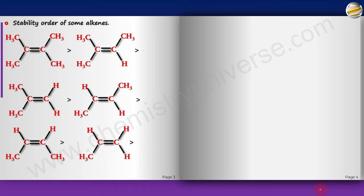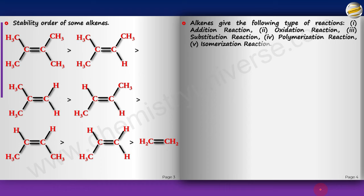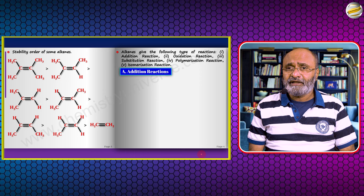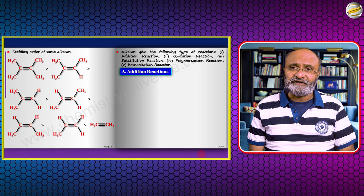Alkenes give the following types of reactions: addition, oxidation, substitution, polymerization, and isomerization. First let's look at addition reactions. What I am about to show is something already covered in electromeric effect in general organic chemistry. An alkene polarizes an existing neutral molecule and reacts with it — first showing electromeric effect to polarize the reagent, then reacting with it. These are generally electrophilic addition reactions.